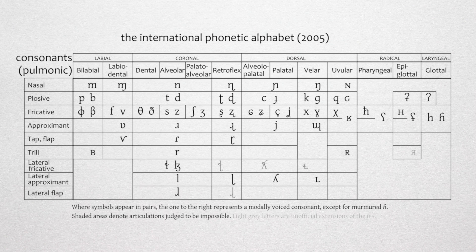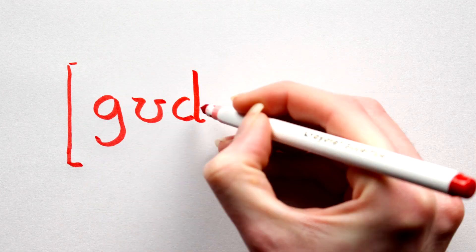To summarise, here is the IPA consonant chart. The columns represent place of articulation — where the obstruction is occurring — and the rows represent manner of articulation — how much of the airflow is being obstructed. Next up: voicing. Stay tuned.